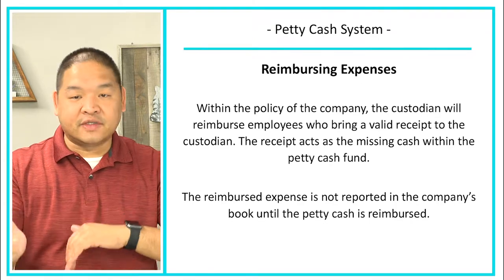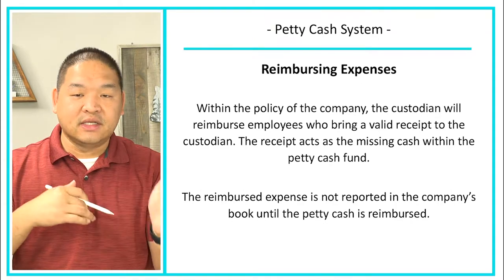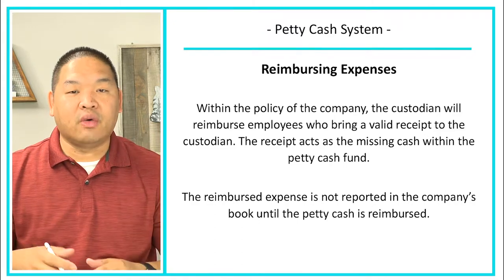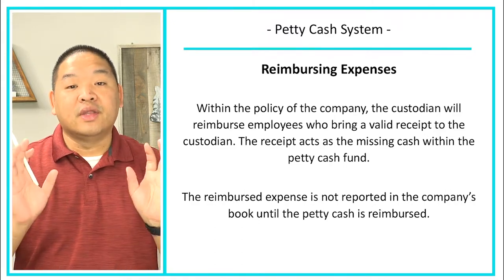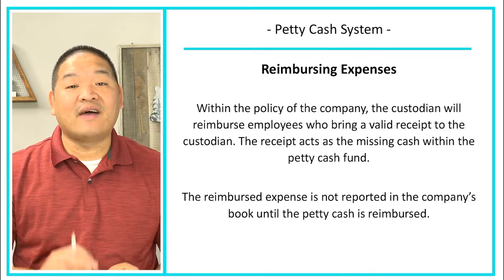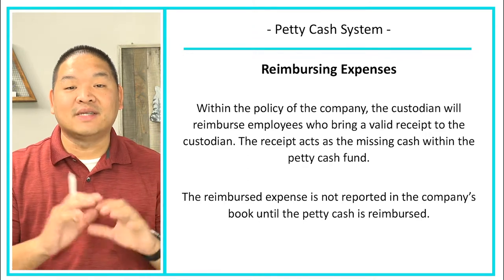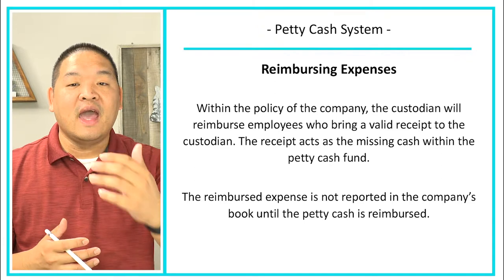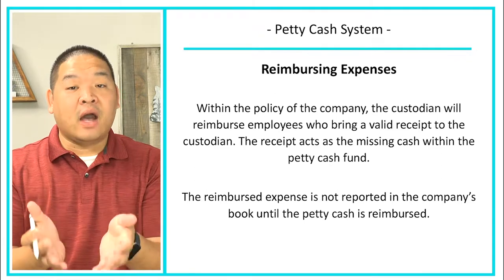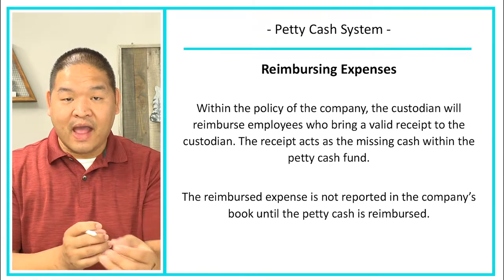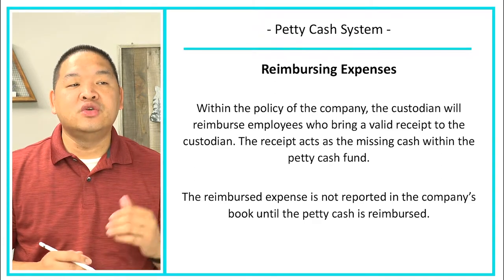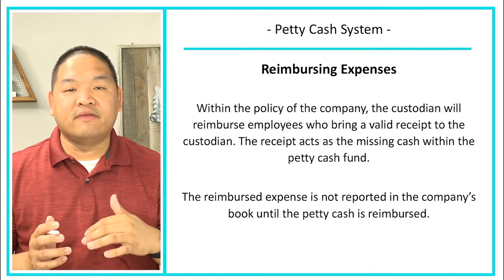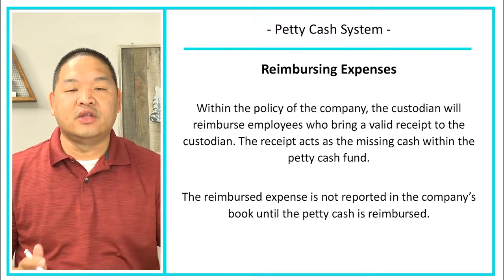The running total continues: reimburse someone else $10 and it's $70 cash and $30 in receipts; another $20 and it's $50 and $50 — and so on. The combined amount of cash and receipts must always equal the total amount the fund started with.